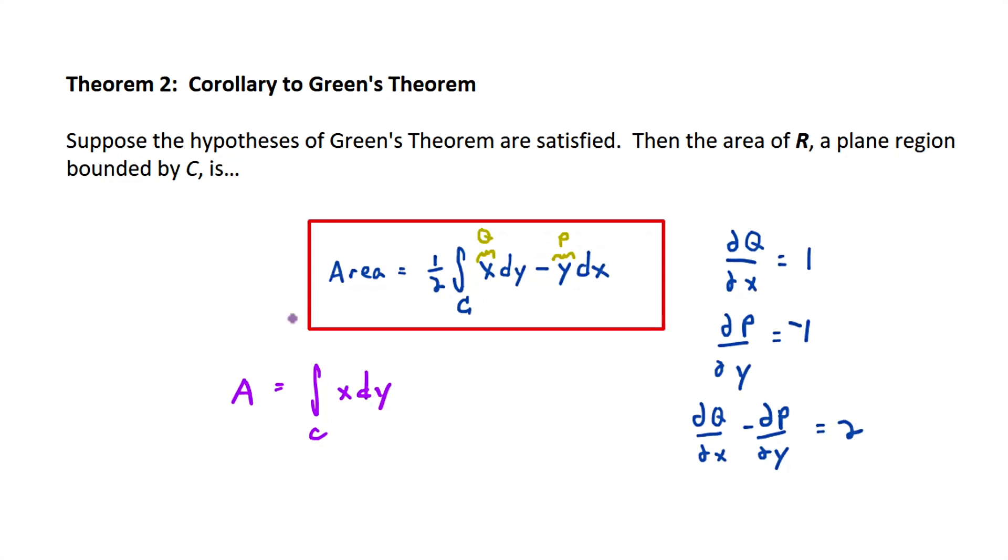What's another one you could get crossing out the one-half and the x dy? So pretend like Q is zero, in other words. And then you've got another result, don't you? I think it'll work out as is. Zero minus negative one. Yeah. So another result is A equals the integral over C of, we'll put the negative out front, negative y dx. Because of the subtraction in the integrand in Green's theorem.